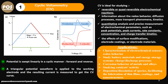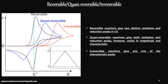Now let's discuss how we understand from a CV curve whether a reaction is reversible, irreversible, or quasi-reversible. If the reaction is ideally reversible, we get a perfect oxidation and a perfect reduction peak, as shown by the black line. Quasi-reversible occurs when the forward reaction has a higher rate constant than the backward reaction, so product formation is higher than reversion — giving two peaks of unequal intensity.